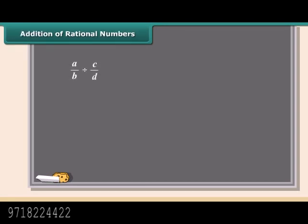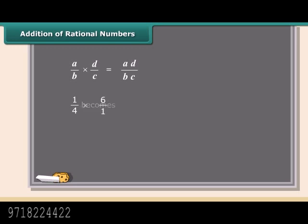Division of rational numbers is again very simple. First, flip the second number over to make it a reciprocal, then do a simple multiplication. Here is an example: we will divide 1 by 4 and 1 by 6. Turn the second fraction upside down so that it becomes a reciprocal, then multiply the first fraction by that reciprocal. This fraction can be further simplified to 3 by 2.